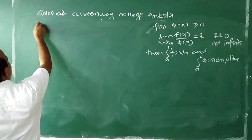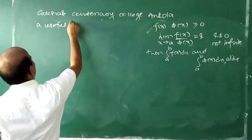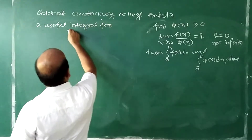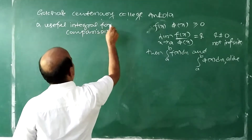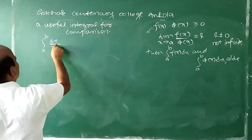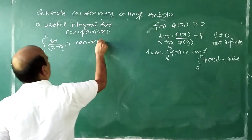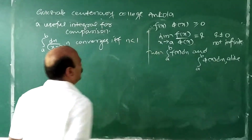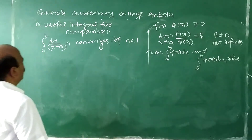Now, what is a useful integral for comparison? The first useful integral is ∫A to B dx/(x−A)^N, which converges if and only if N is less than 1.